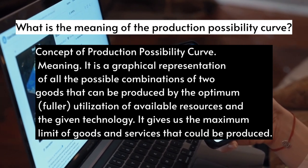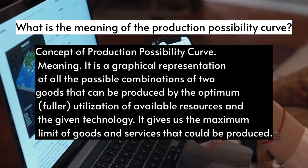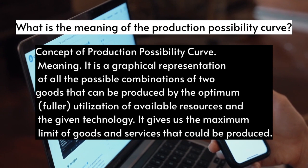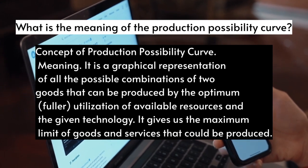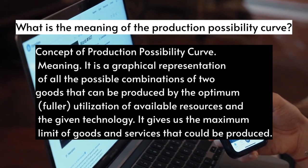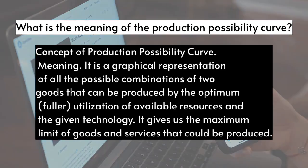The concept of production possibility curve: it is a graphical representation of all the possible combinations of two goods that can be produced by the optimum utilization of available resources and the given technology. It gives us the maximum limit of goods and services that could be produced.